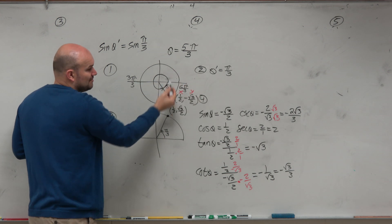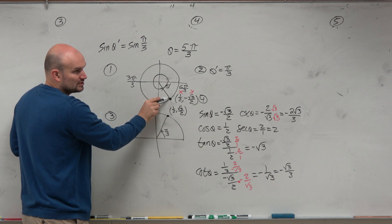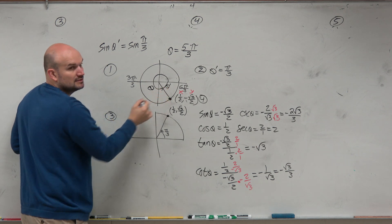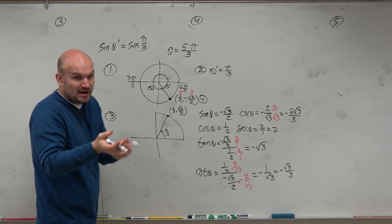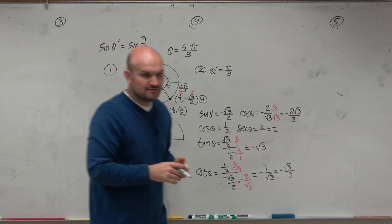Does that make sense? Because if you use θ prime, π over 3, everything would be positive. You'd use that point. Everything's not positive in the fourth quadrant. That's why we have to use that point, which is for θ, not θ prime. But we use θ prime to find the point, and then we apply the signs from the angle.